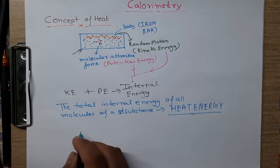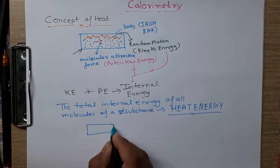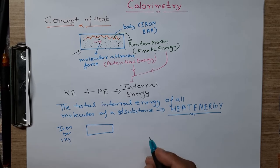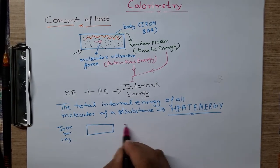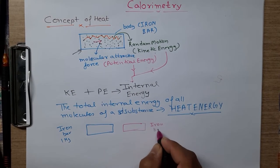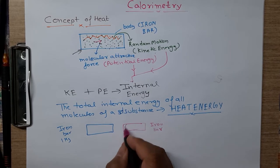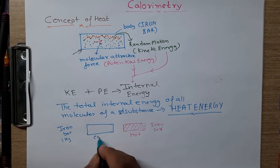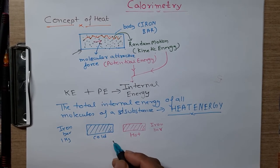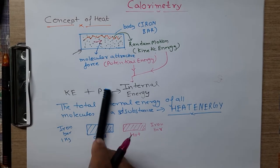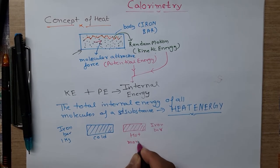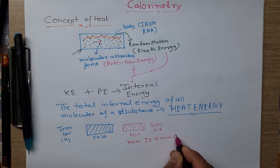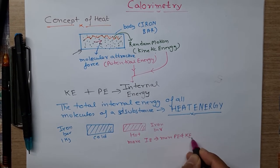Now we have two things here. Let us say we have two similar kinds of body. One is an iron bar of 1 kg, and another is also an iron bar of 1 kg. I am drawing one in red showcasing that this is the hot iron bar, and the blue one is the cold bar. The hot body has more internal energy, meaning it has more potential energy and kinetic energy.